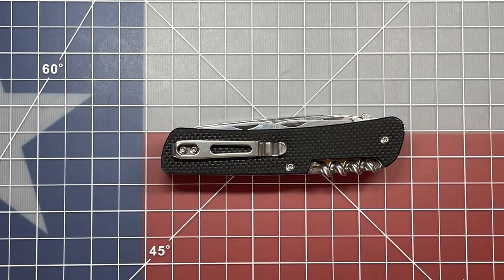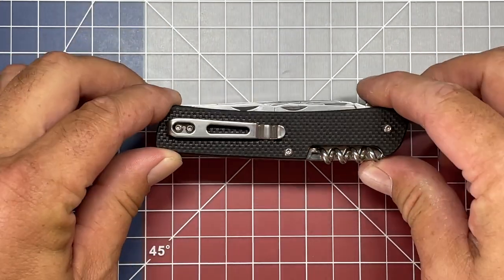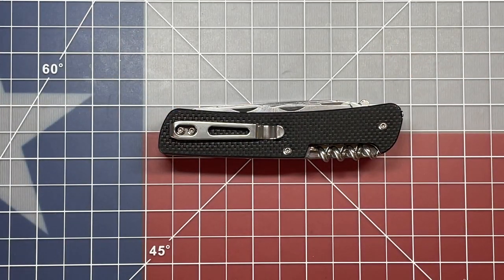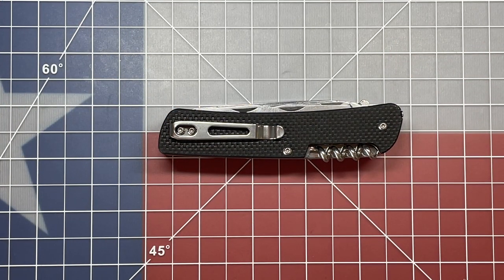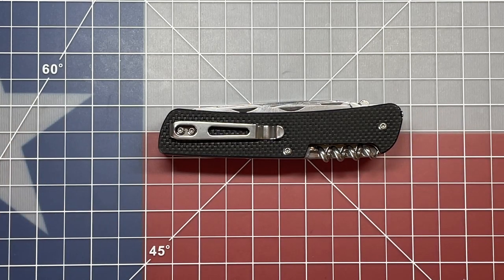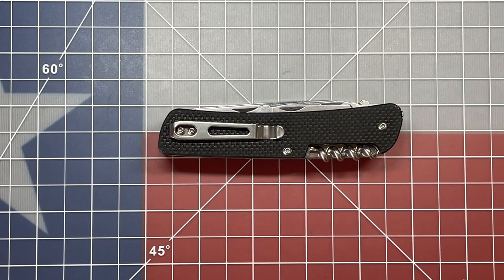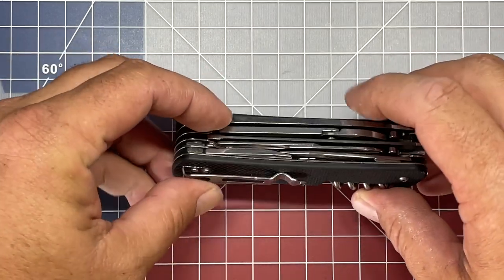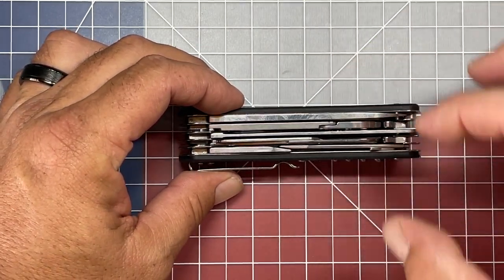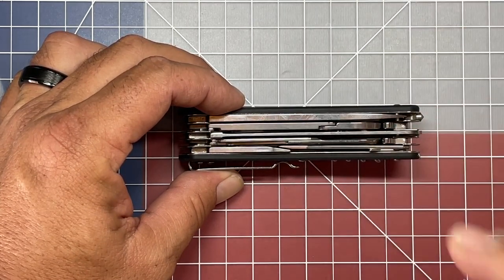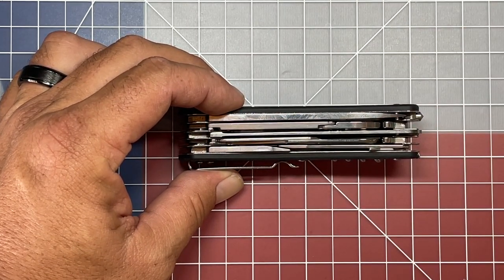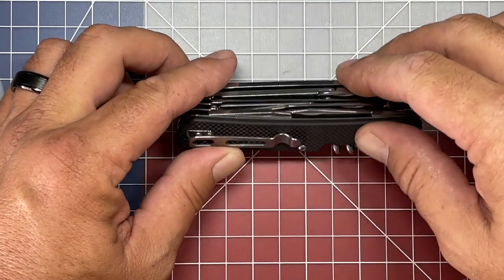For the specs on this five-layer knife, it comes in at 242 grams or about 8.5 ounces. The overall length is 4 3/8 of an inch or about 111 millimeters. The widest point is an inch and a quarter wide or right under 32 millimeters. The depth is one inch or 25.4 millimeters.